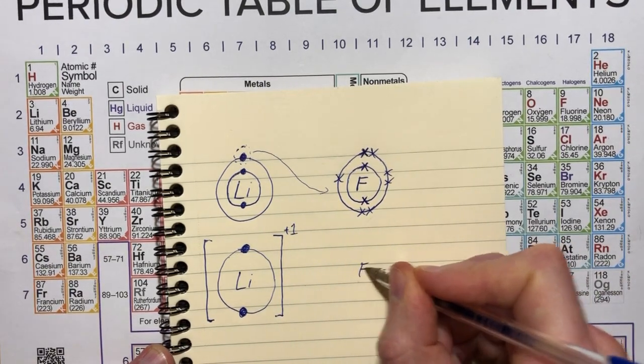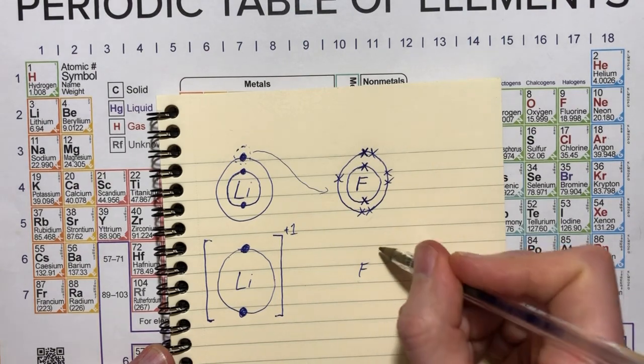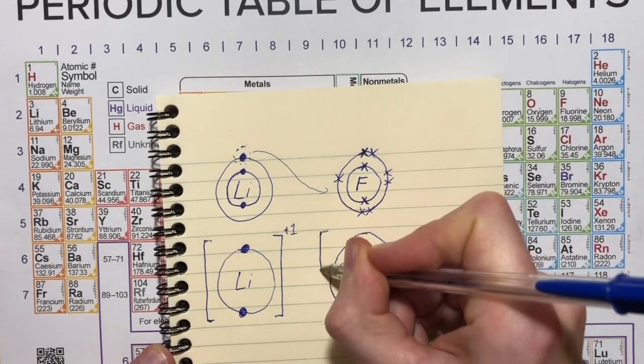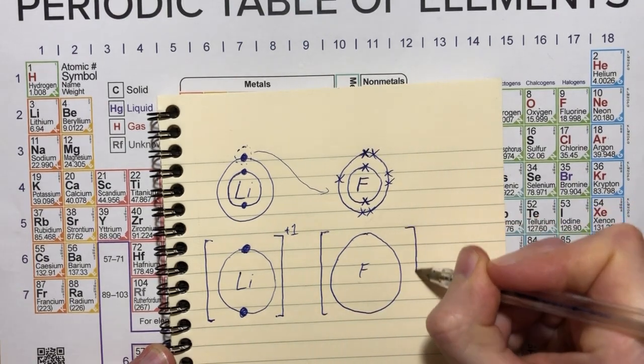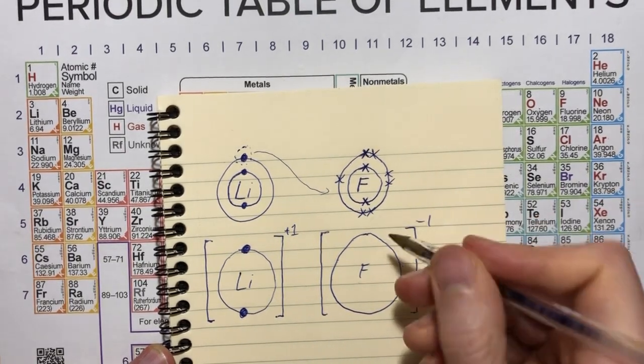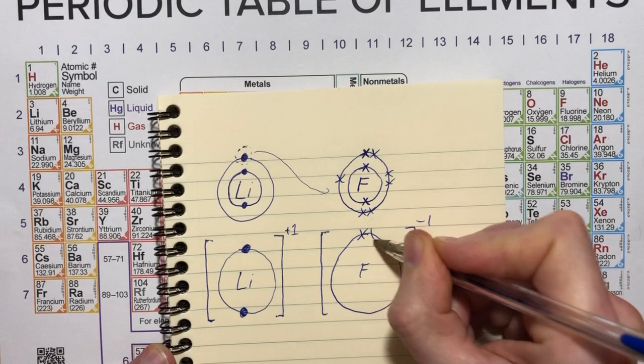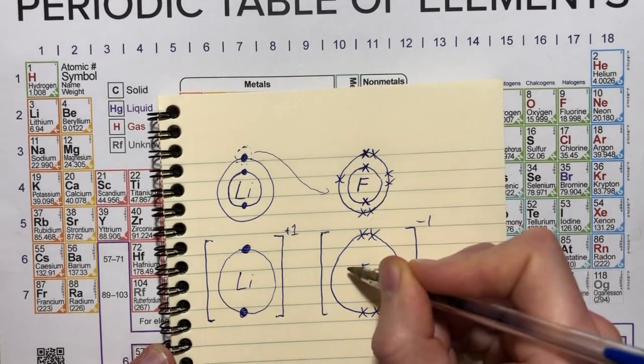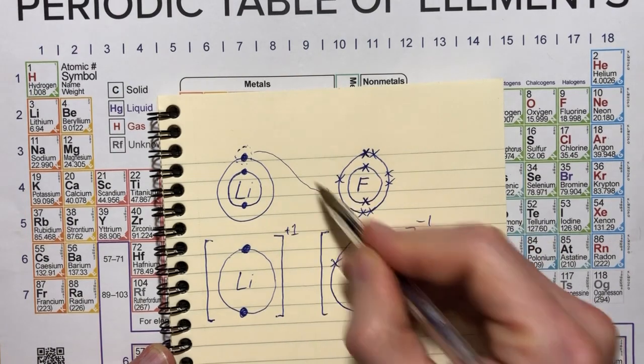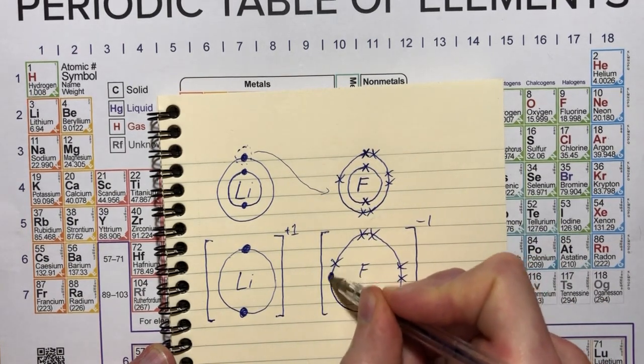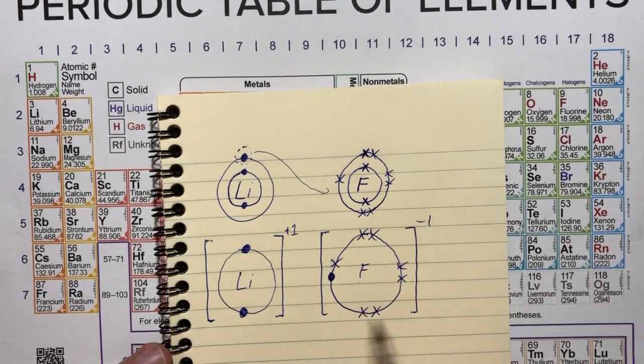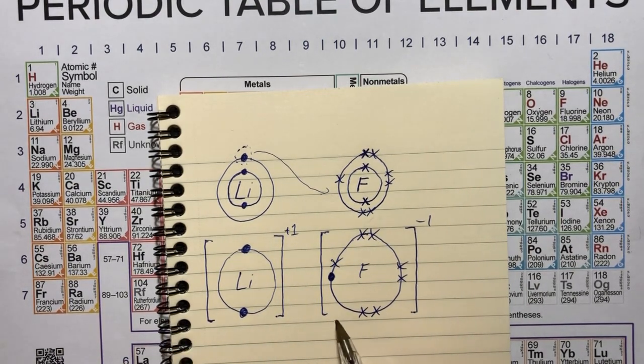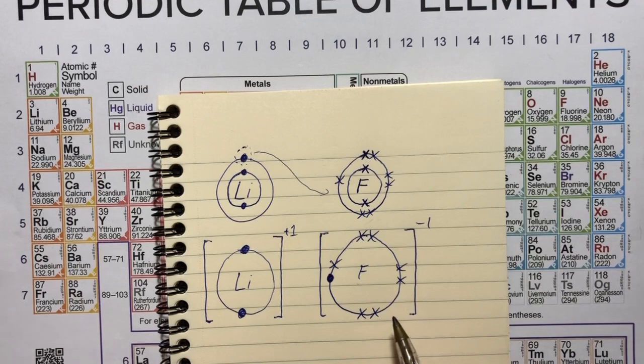The fluorine atom has gained an electron. So it's now going to have an excess negative charge of minus one like this. And so we can put in the rest of the electrons. These are the ones that were there originally. And then we've gained that one dot, making it negative. And so the two atoms stick together by electrostatic attraction. And that's what an ionic bond is.